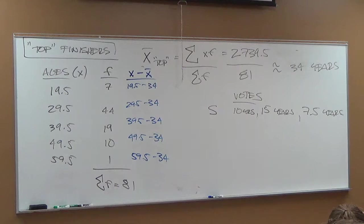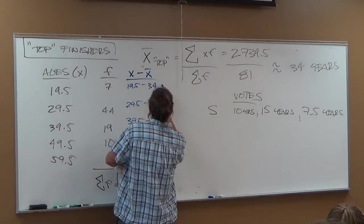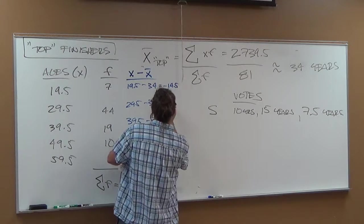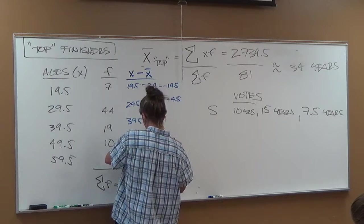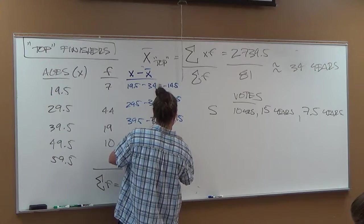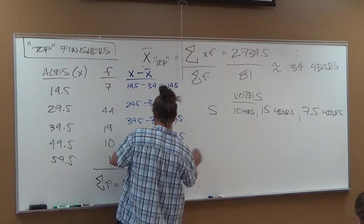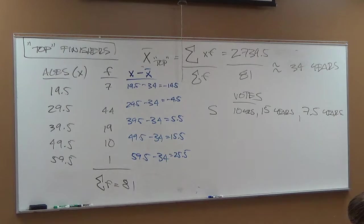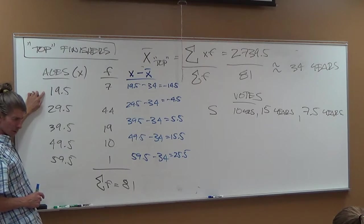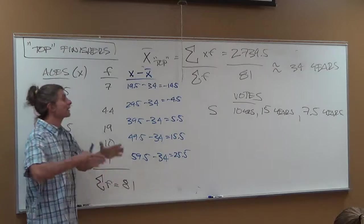Okay, you guys check my math on this one. So I got negative 14.5, then it goes up by 10, yeah? Then 5.5. Then 15.5, then 25.5. That should have been up by 10, I grouped it that way intentionally. So all I'm doing is I'm taking the ages, the data, and subtracting the average from each of them to get the average distance.